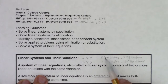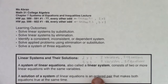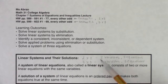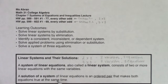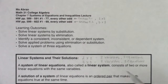You need a one-to-one relationship between variables and equations to solve a system. If you have two variables, you need two equations; three variables need three equations. The solution of a system of linear equations is an ordered pair that makes both equations true at the same time — this definition applies to two by twos. For three by three systems, the solution is an ordered triple that makes all three equations true simultaneously.